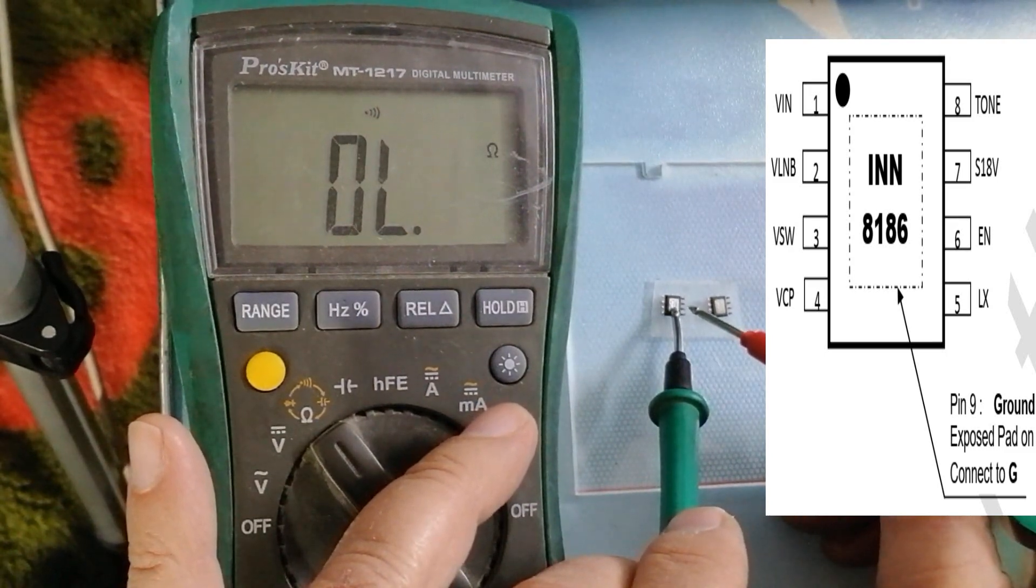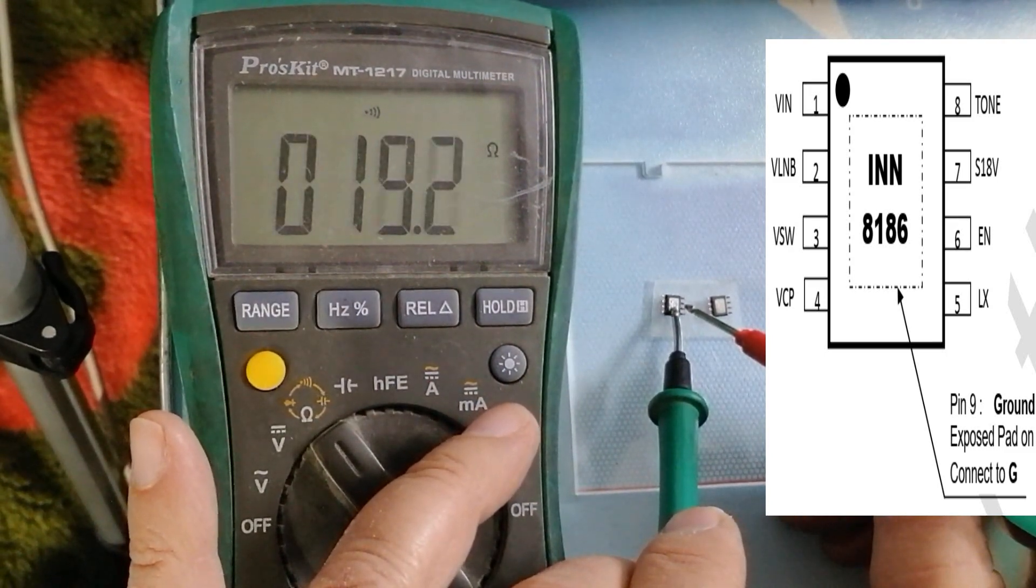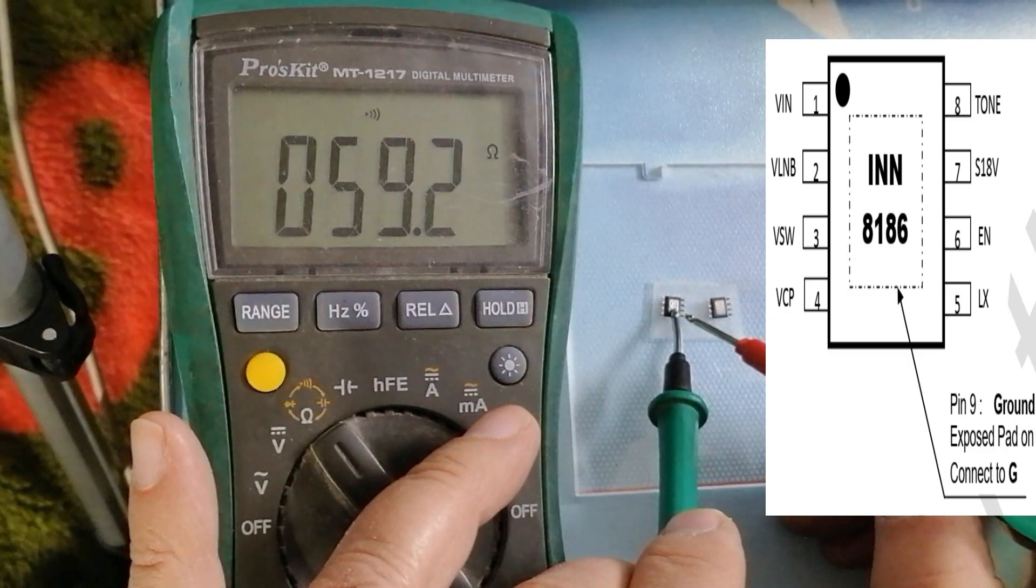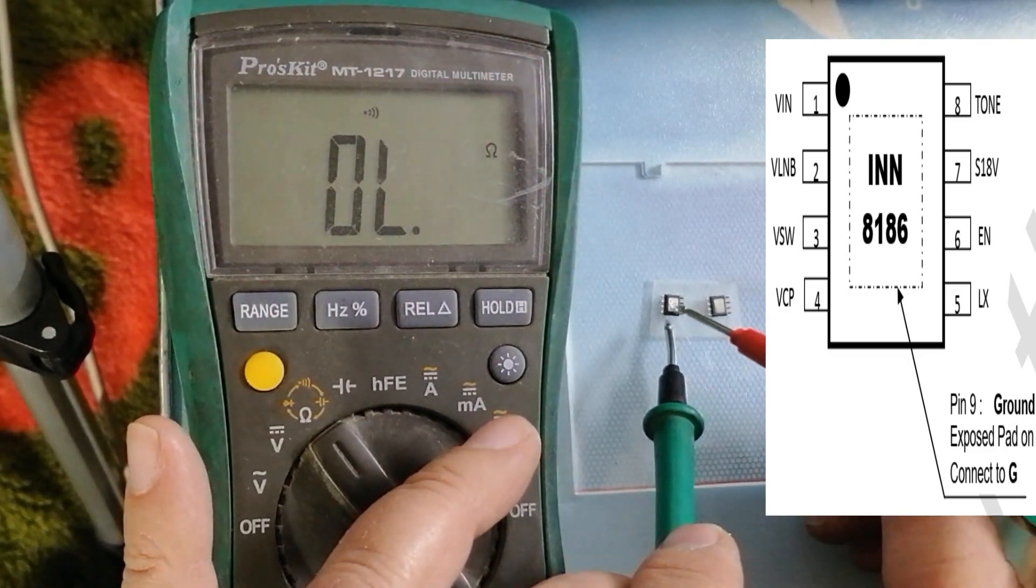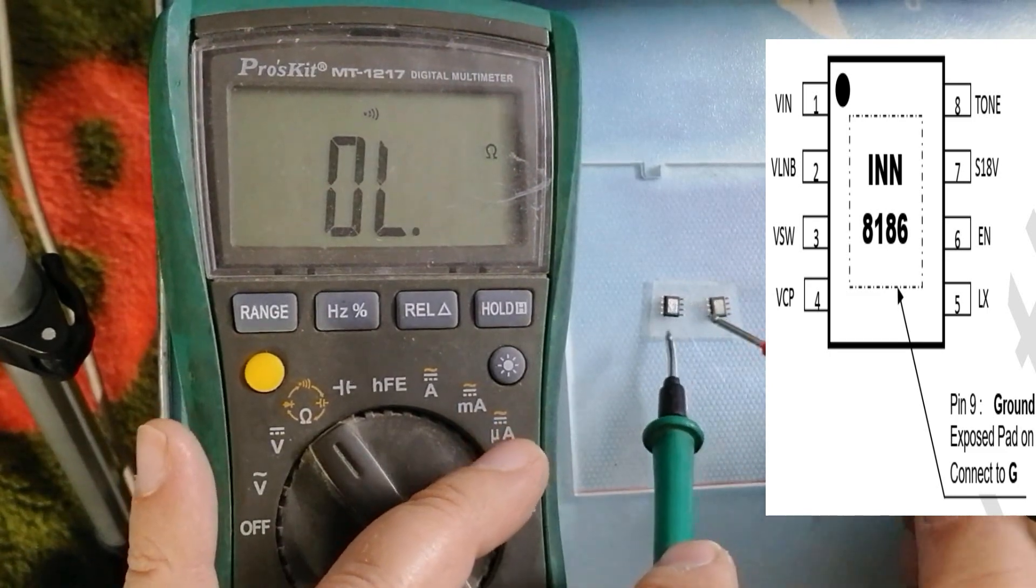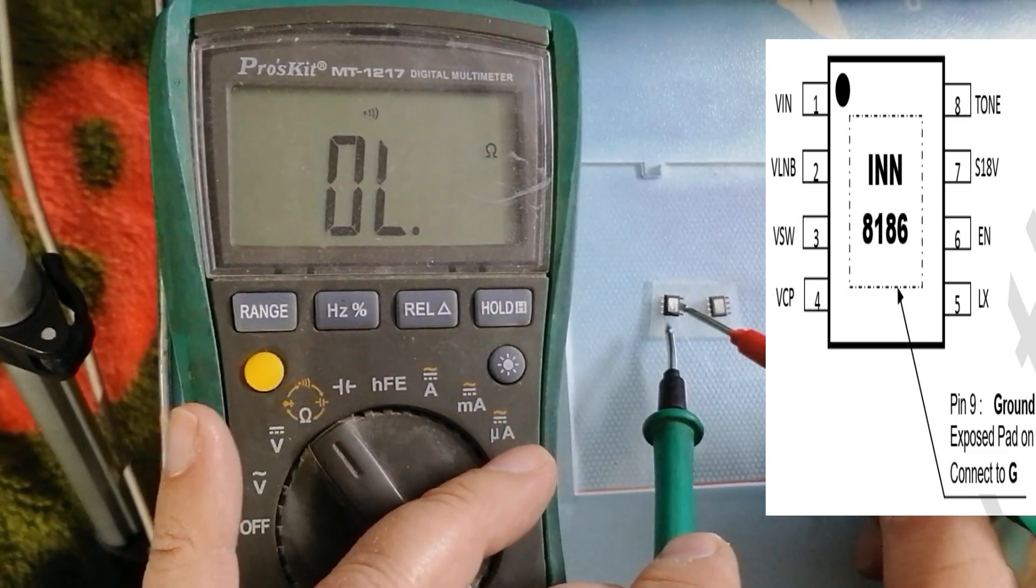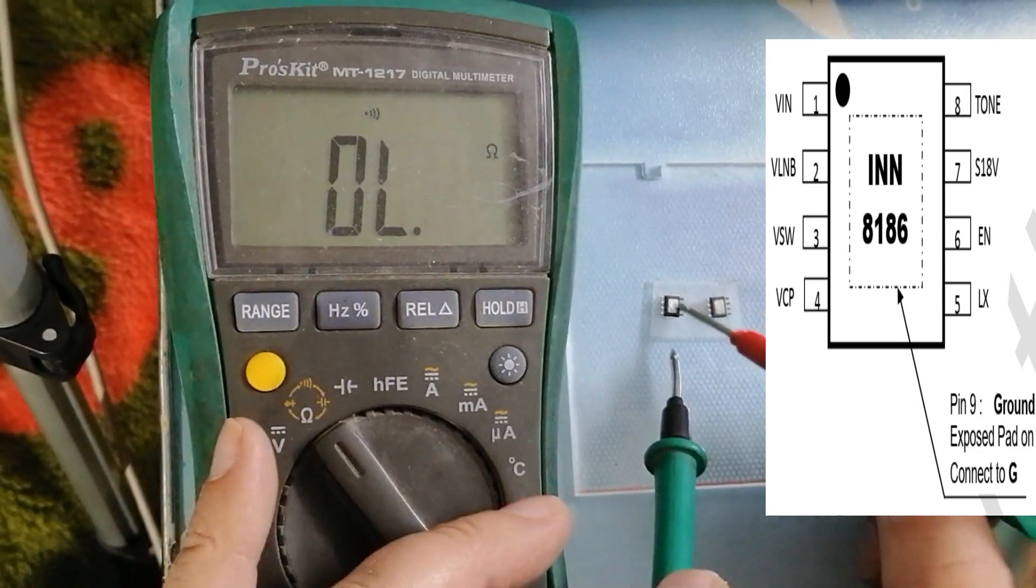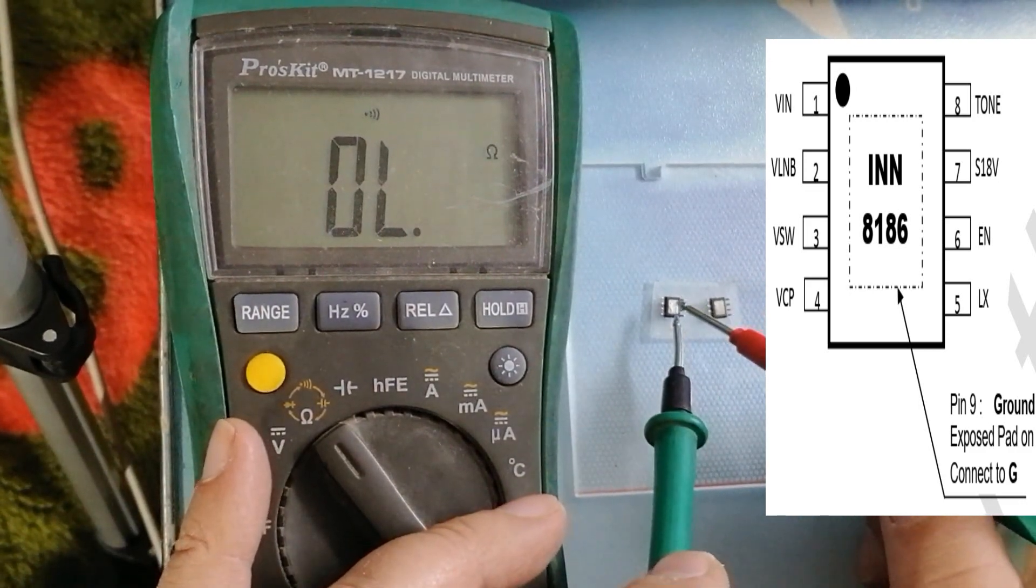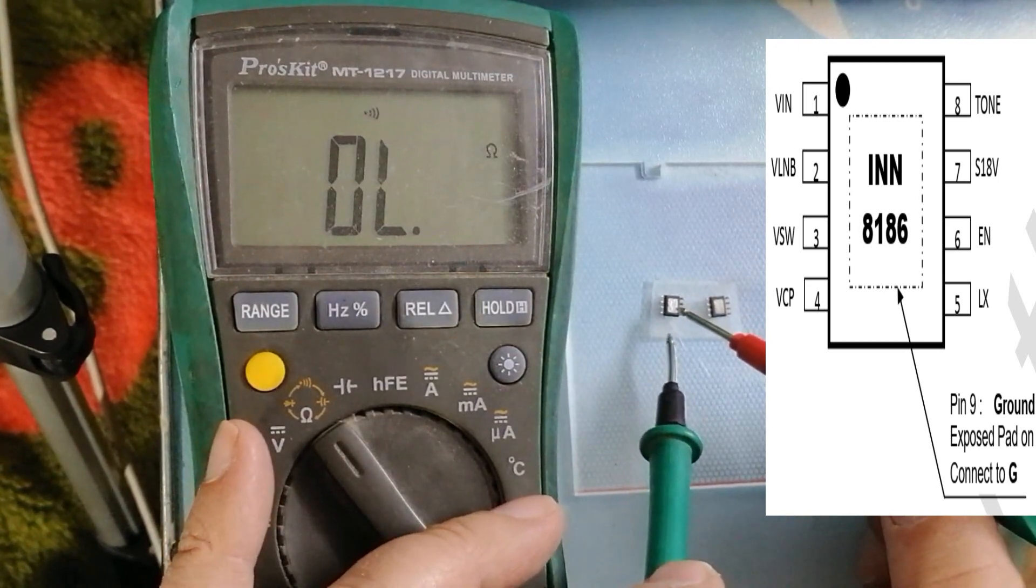Pin number 3 gives 15 volts, shorted with the ground. Pin number 4 gives 18 volts. Now, what we can decide about this reading? That means this IC is shorted, damaged.